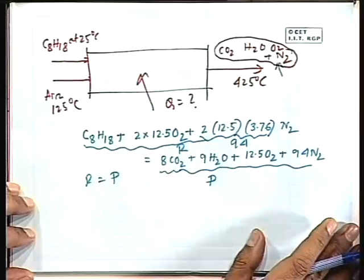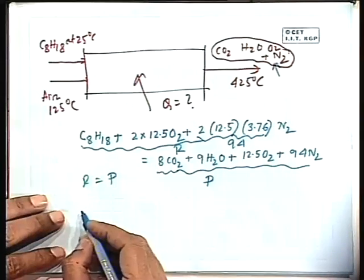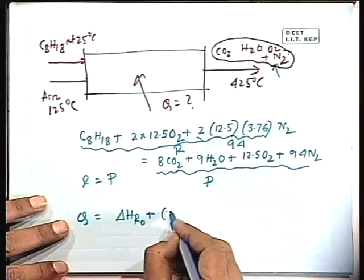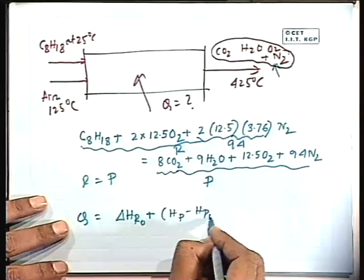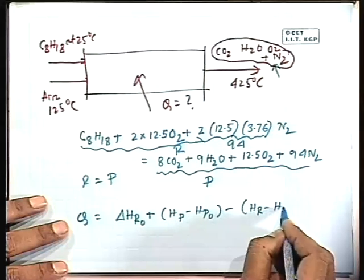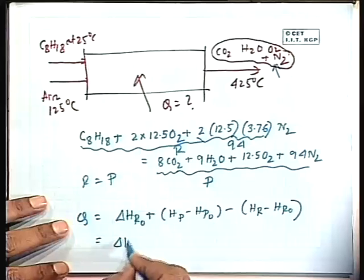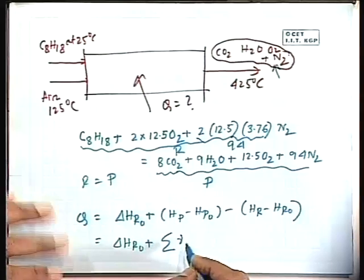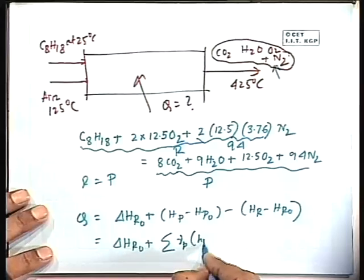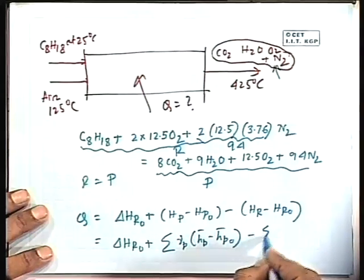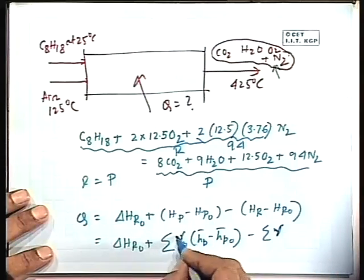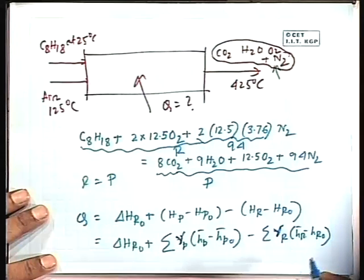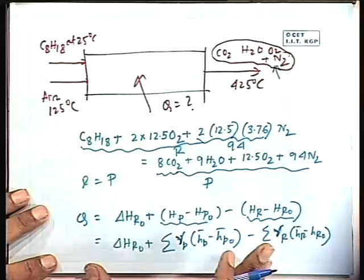The equation to use is: Q = ΔH_R0 + Σ_P ν_i(H̄_P − H̄_P0) − Σ_R γ_j(H̄_R − H̄_R0). This is the general first law expression. The summation is over 4 product components (CO₂, H₂O, O₂, N₂) and 3 reactant components (C₈H₁₈, O₂, N₂). Delta H_R0 is given as −5.1 × 10⁶ kJ/kg-mol.